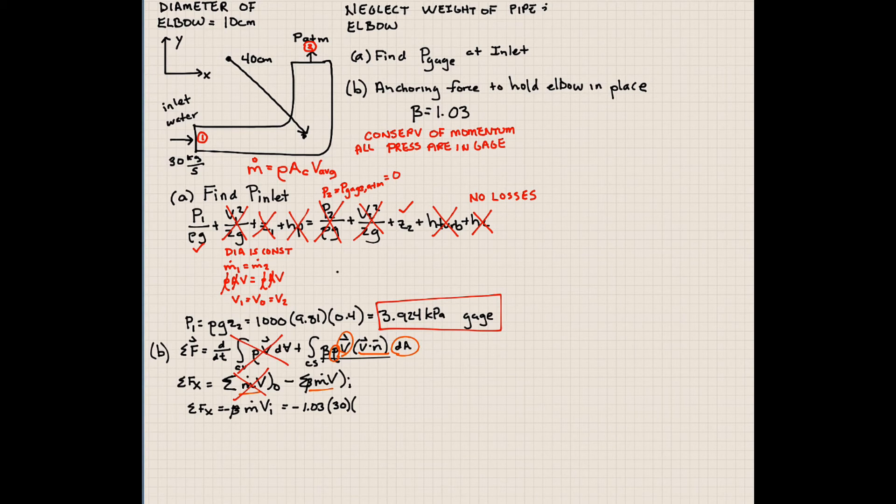I'm going to do that in the upper right-hand corner here. So mass flow rate by definition is density times cross-sectional area times velocity. So this is 30 kilograms per second. Our density is 1000. Our cross-sectional area is pi over 4 times 0.1 squared times velocity. So if we solve for our velocity, our average velocity here, our average velocity is going to come out to be 3.82 meters per second.